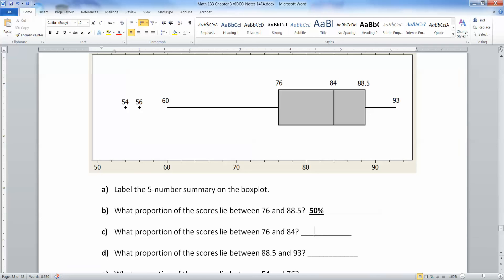Then 76 to 84, well, that's half of that. So that should be 25%, because that's between Q1 and the Q2, the median. So then what about between 88.5 and 93? Well, that's the whisker over here, and again, that should be 25%. Every section of the graph you see is worth 25.